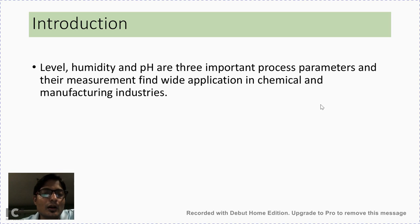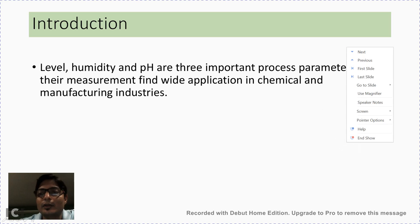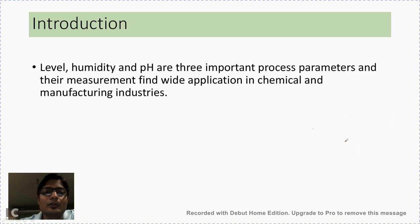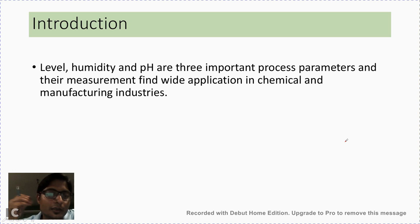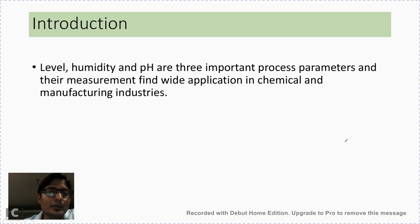Similarly in most industries we need to maintain the level of liquid in boilers or drums at a particular level to obtain a certain pressure, so that needs to be continuously monitored. Also the humidity in certain places like textile industry or paper industry plays a vital role in maintaining quality — a humid environment may deteriorate the quality of paper. Therefore we need to monitor humidity in certain industrial places, and in this topic we are going to discuss different ways to measure these three important parameters: level, humidity and pH.